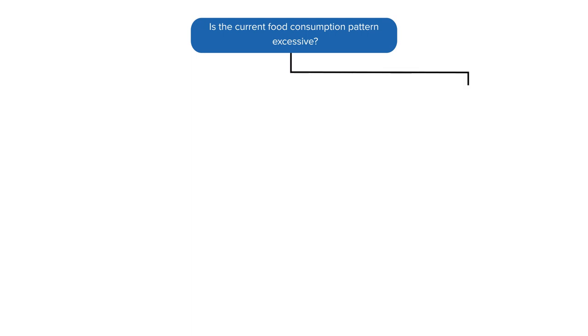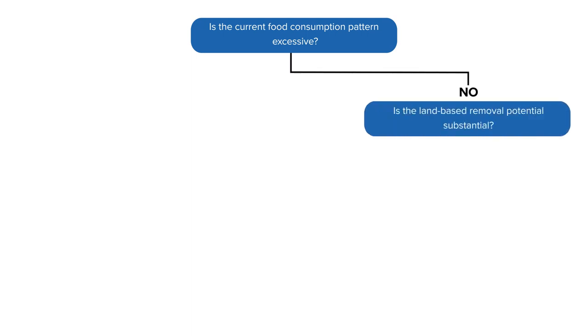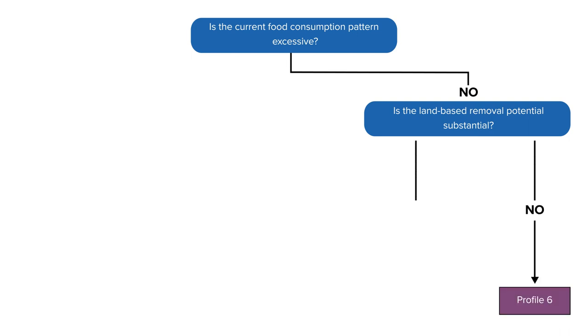First, is the current food consumption pattern excessive? If the answer is no, we next need to ask if the land-based removal potential is substantial. If the answer is no, then the country falls into profile 6. If the answer is yes, then the country falls into profile 5.